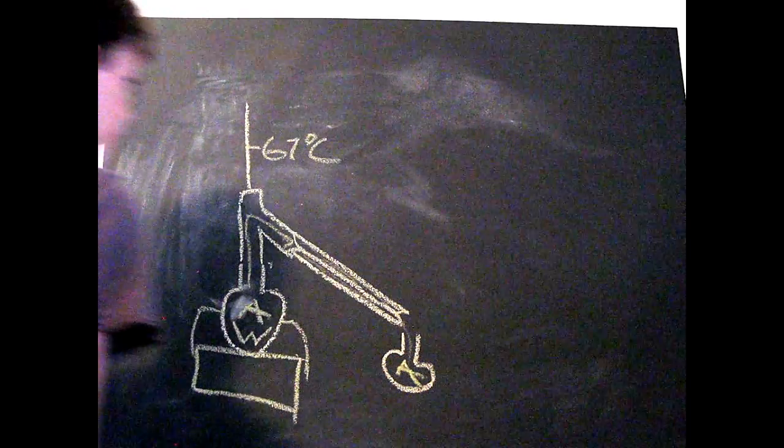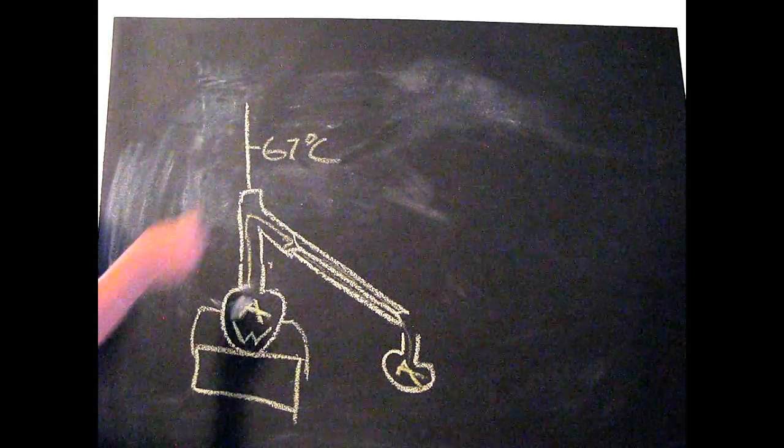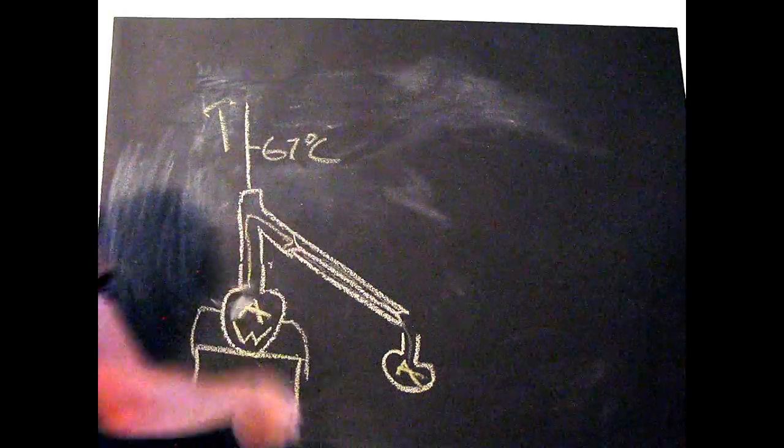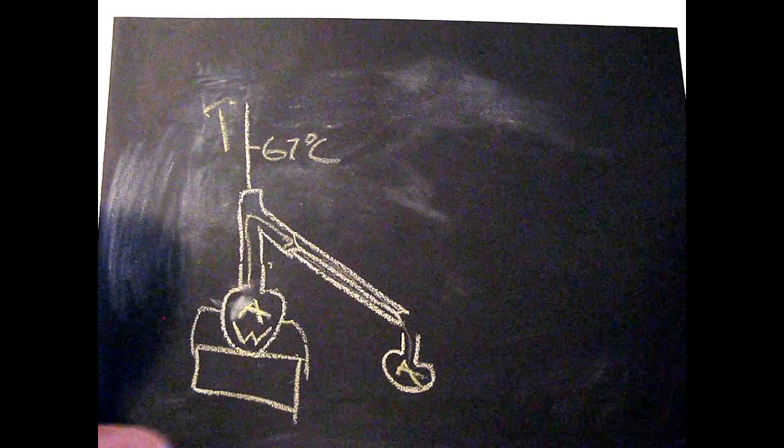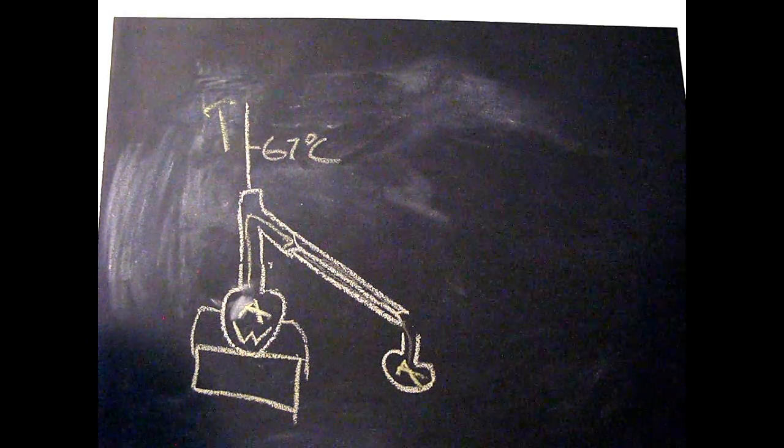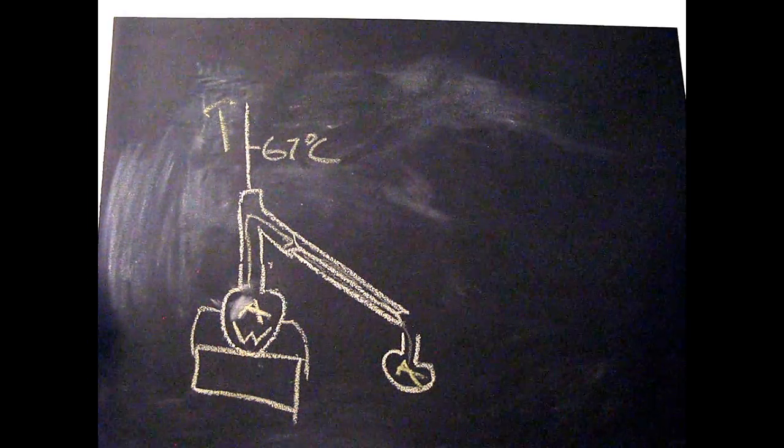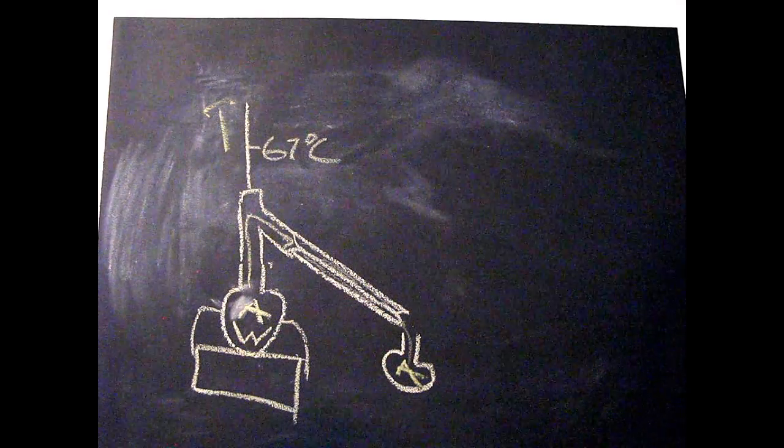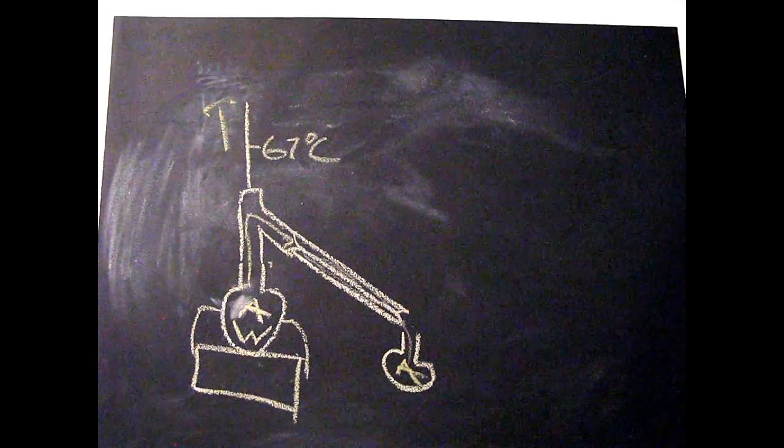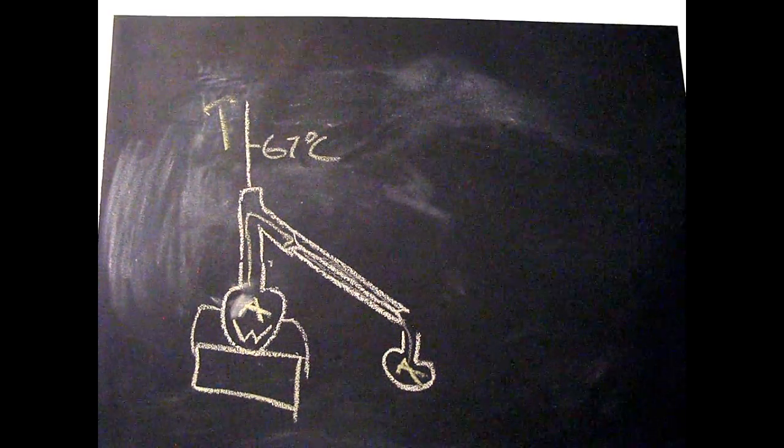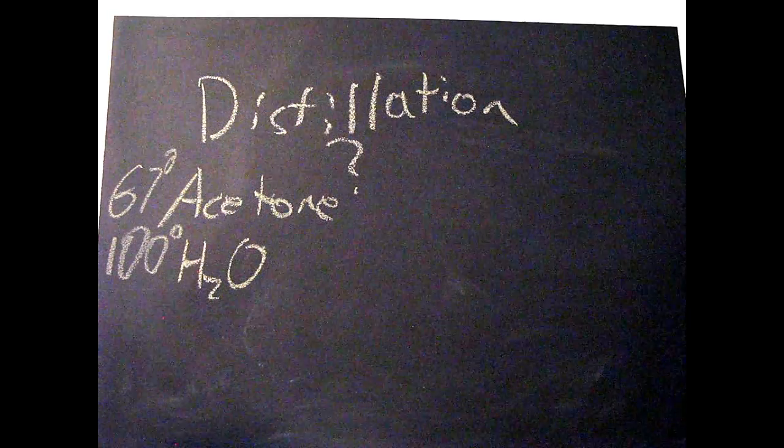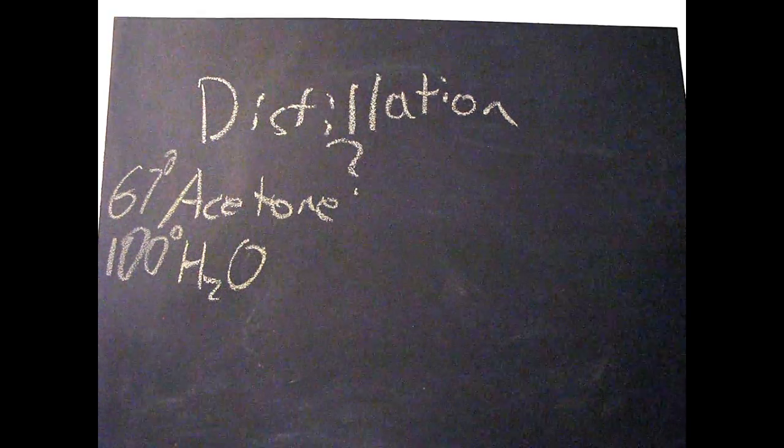So then you just have the acetone over here. And once the temperature starts to rise, you're going to want to stop your distillation and then over in your receiving flask, you'll have pretty highly pure acetone or whatever other liquid you're distilling. Now over to how to set a distillation apparatus up.